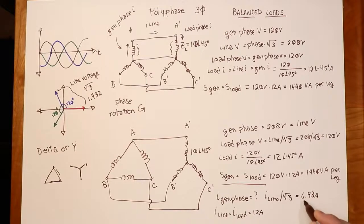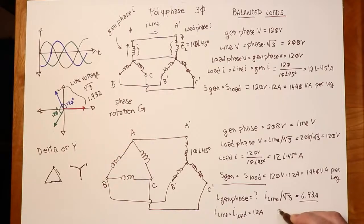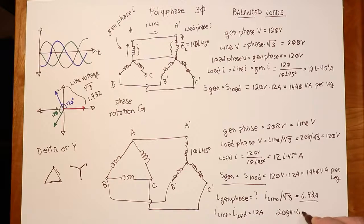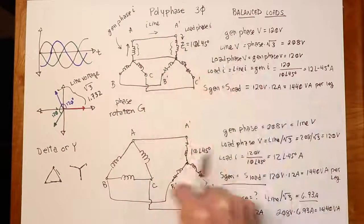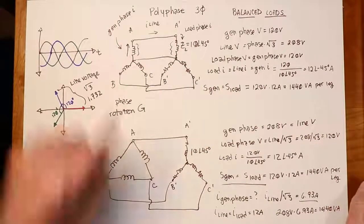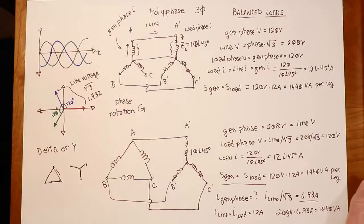As a verification: 6.93 amps times 208 volts gives the expected 1440 volt-amps per leg. Next time we'll look at delta connections on our loads, with Y and delta generators.